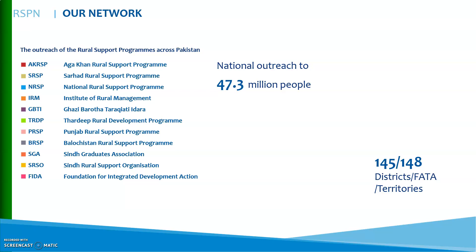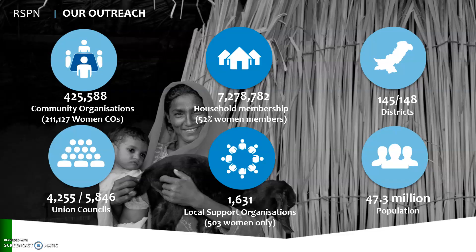The national outreach is available to 47.3 million people. This outreach works through community organizations and women community organizations, union councils, household membership, and local support organizations. 145 out of 148 districts have been covered, meaning that 47.3 million people have been reached by this RSPN.